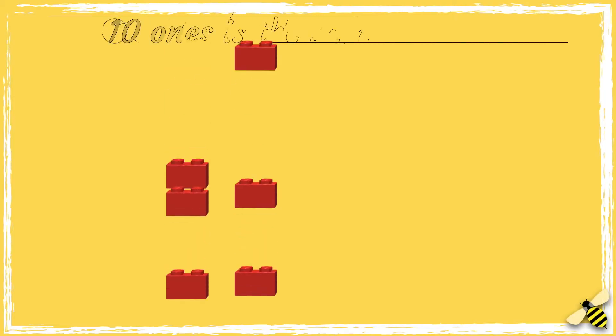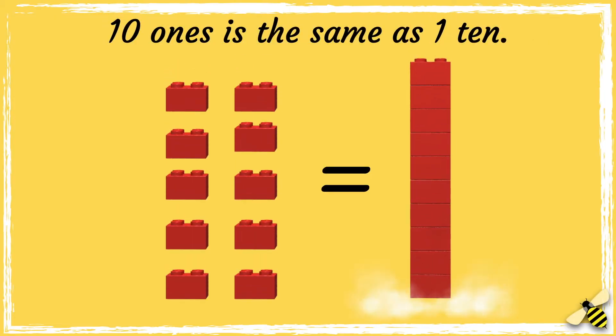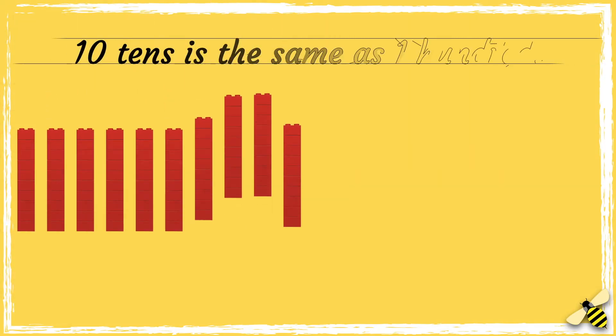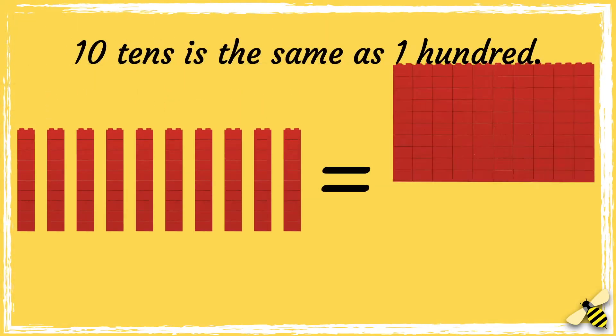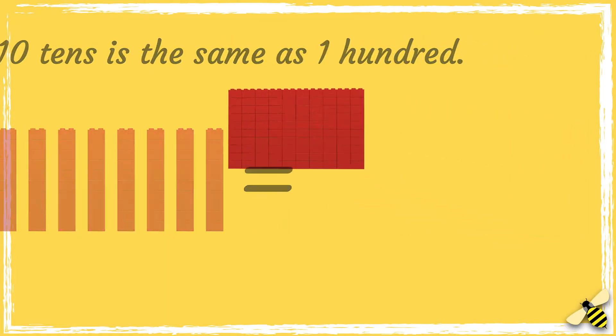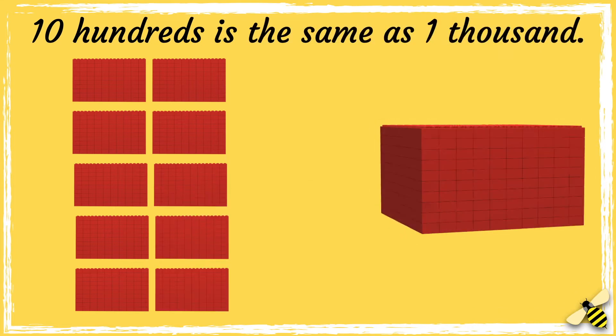Ten ones is the same as one ten. Ten tens is the same as one hundred. And ten hundreds is the same as one thousand.